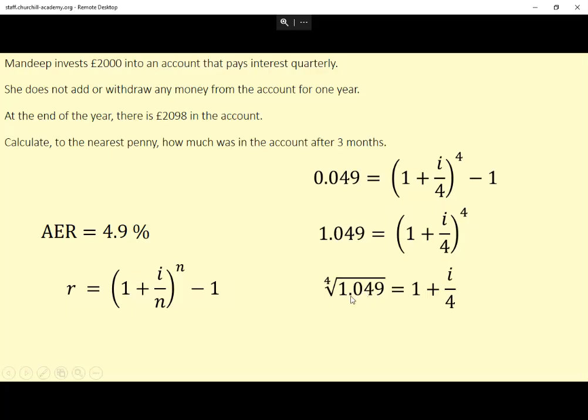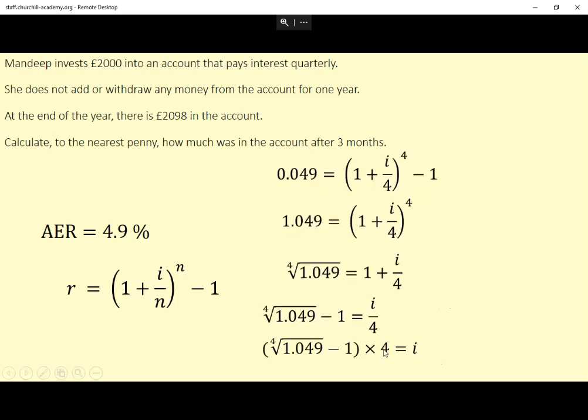I'm not going to do it now because there's a danger that I'll write down a shortened version, a rounded version, and then I might lose some accuracy points. This is 1 plus i over 4. I don't want that 1 there, so I just need to take away 1. And then i divided by 4 is that, so if I multiply that by 4, that will tell me what i is.